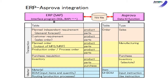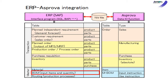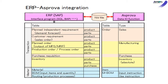As master data, there are Material, BOM, Input Items and Quantity, and Routing. There are three corresponding data tables in Asprova: Order, Item, and MBOM — Manufacturing Bill of Materials.